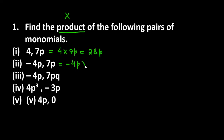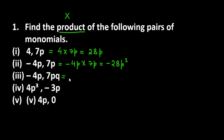The second term is minus 4p and 7p. 7 and 4 will multiply to give 28, and the minus sign carries over. Now, how many p's are there? Each term has one p, so together there are two p's — giving p squared. In multiplication, variables do not stay the same; they get changed.